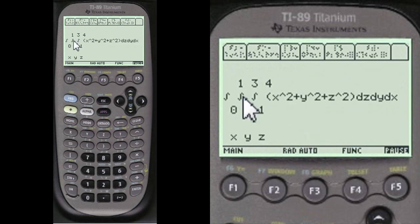Here we've entered the limits of integration there. And here's the function. dz dy dx. You integrate with respect to z on this one because this is the first one. Then with respect to y, then with respect to x.